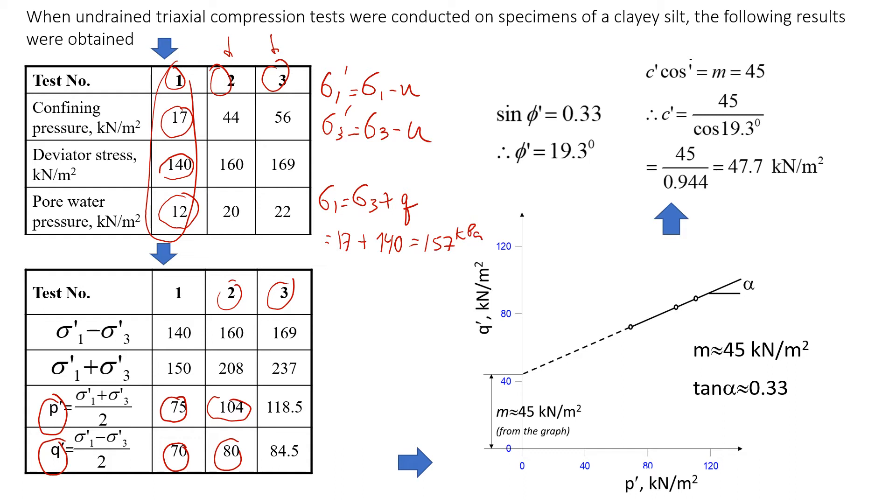Now let's change it to the effective stress conditions. We're going to subtract pore water pressure. It will be sigma 1 minus pore water pressure, which is 157 minus 12. It will be 145 kPa.